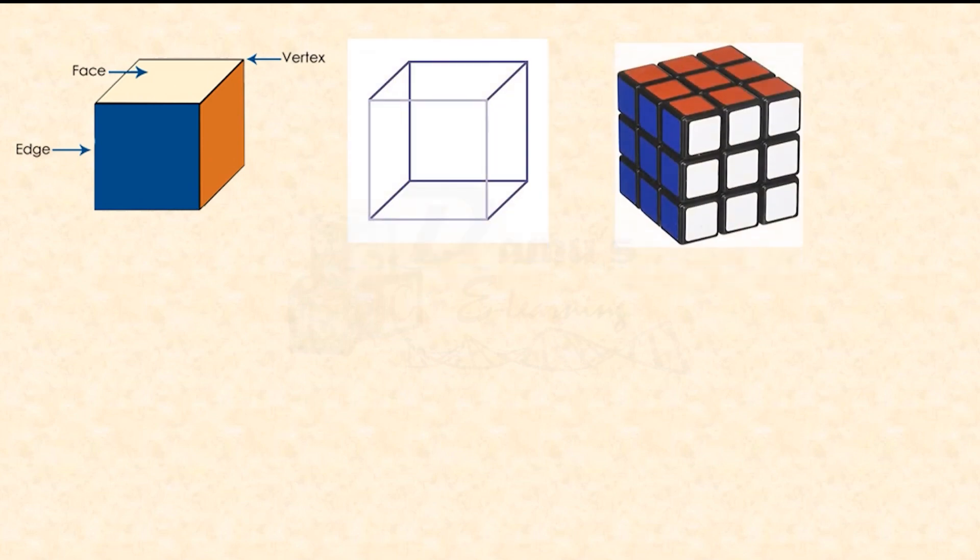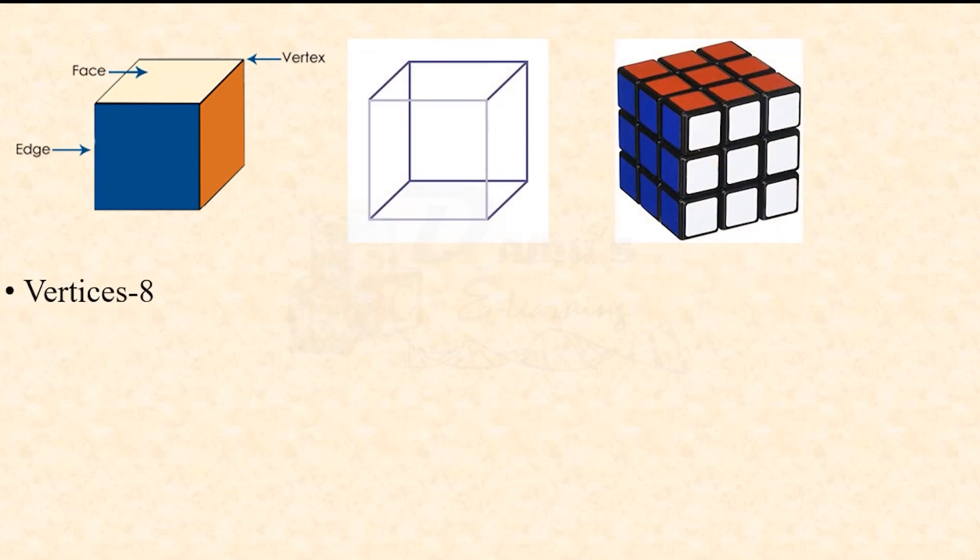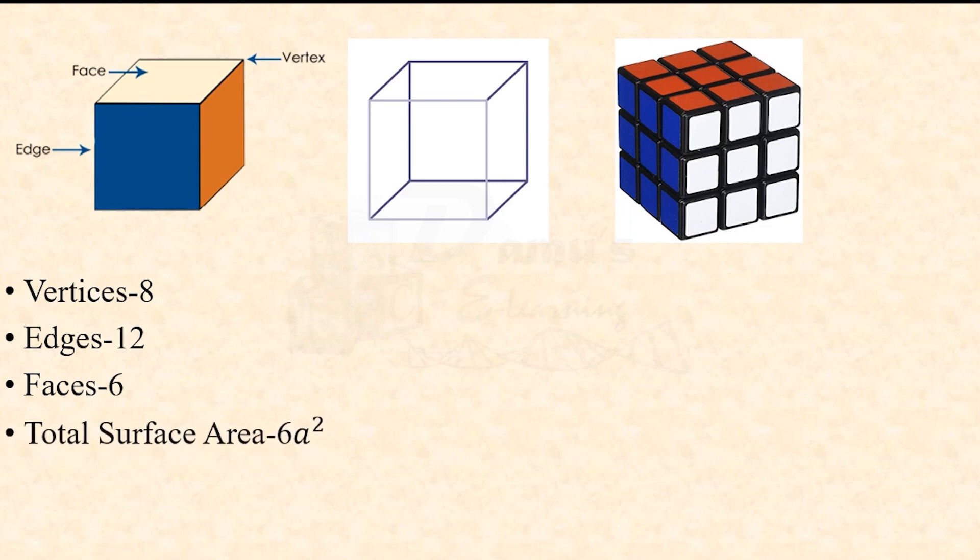About a cube, we all know that a cube has 8 vertices, 12 edges, 6 faces. Total surface area is 6a², volume is a³, longest diagonal is 2√3a where a is the length of the side. We'll go through different types of aptitude questions that come under cubes.